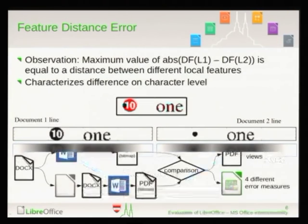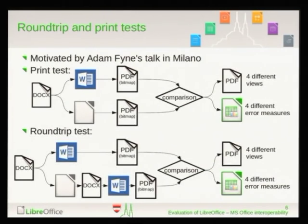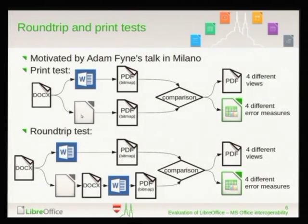So we have our measures. Then we run two kinds of tests: print test and round-trip test. Very simply: we take a document — in this case DOCX — it is opened by Microsoft Office and printed to PDF, then opened by LibreOffice and printed to PDF. These two are compared and a report is generated, along with views for visual inspection.